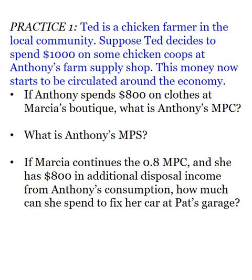Let's practice the math of the multiplier. Ted is a chicken farmer in the local community. Suppose Ted decides to spend $1,000 on some chicken coops at Anthony's Farm Supply Shop — this money now starts to circulate around the economy. The original I, the investment spending, is $1,000. That money is given to Anthony, and Anthony spends $800 of it on clothes at Marsha's Boutique. What is Anthony's MPC? The change in spending over the change in disposable income: he received $1,000 and spent $800, so his MPC is 0.8.